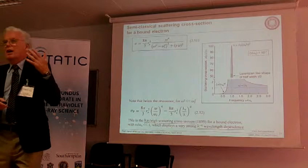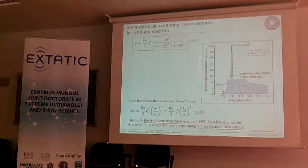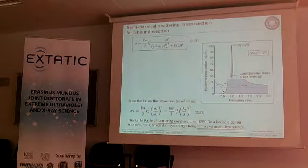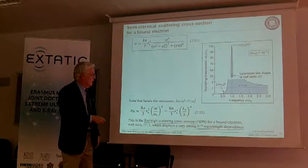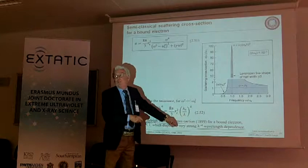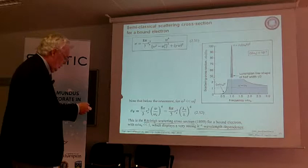Just below the resonance, the cross section goes as omega to the fourth over omega_s-squared. Flipped into wavelength, it goes as one over lambda to the fourth. This is called Rayleigh scattering — the approximation for scattering from a bound electron well below resonance. An example is the blue sky: the resonances of oxygen and nitrogen molecules are in the ultraviolet, and visible light from the sun is below those resonances, so it falls in the Rayleigh regime.